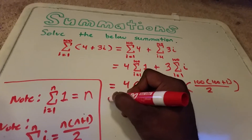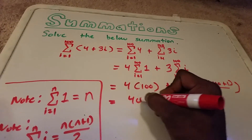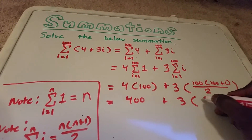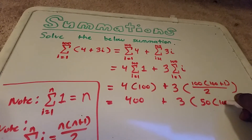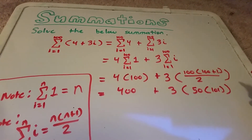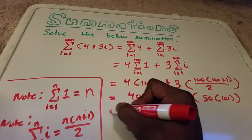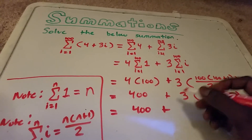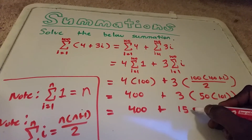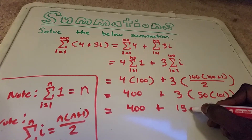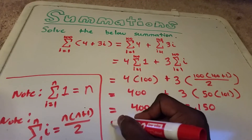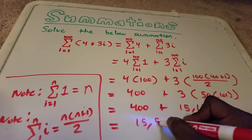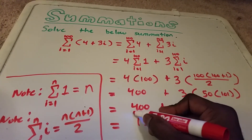Now we can continue to write this out. We get 400 plus 3 times 50 times 101, which equals 400 plus 15,150. Adding those numbers gives us 15,550 as our final answer.